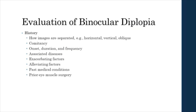Evaluation of binocular diplopia begins with taking a careful history. Be sure to ask about whether the diplopia is horizontal, vertical, or oblique, and about comitancy. Also inquire about onset, duration, and frequency, as well as associated disease, exacerbating and alleviating factors, past medical conditions, and prior eye muscle surgery.